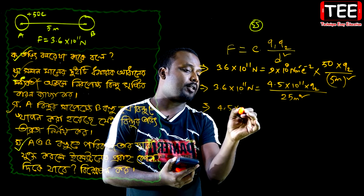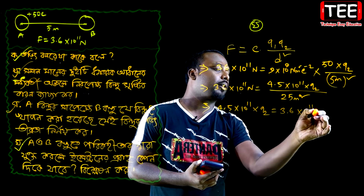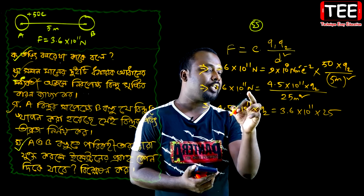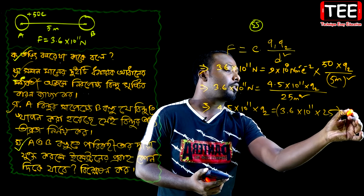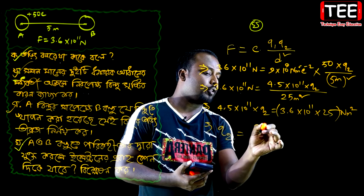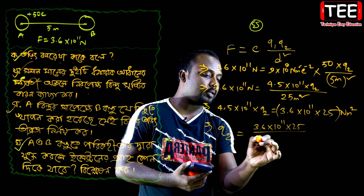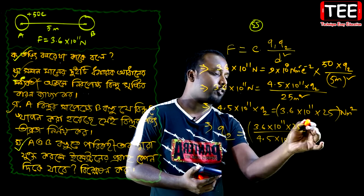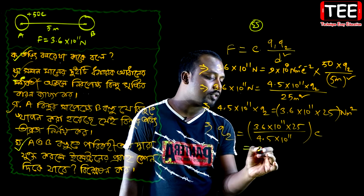4.5 into 10 to the power of 11 into q2 is equal to 3.6 into 10 to the power of 11 into 15. So, the charge of 4.5 into 10 to the power of 11 gives 2.5 into 10 to the power of 10. And then the charge value of 4.5 into 10 to the power of 11 — so Q2 is 20 C.